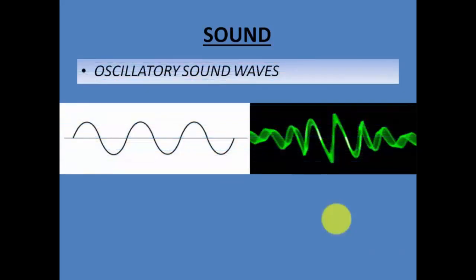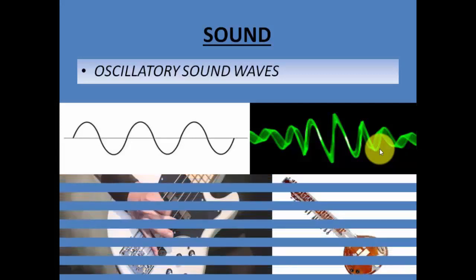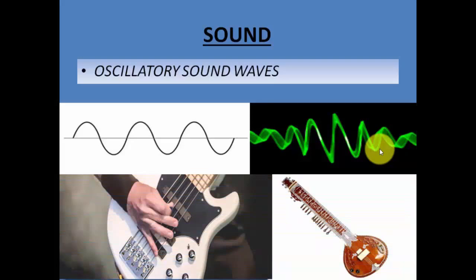So the sounds we hear are nothing but oscillatory sound waves where the amplitude goes high and low, as shown here — the amplitude is high and low, high and low. These are called waves. The vibrations are nothing but these high-and-low waves. When you pull the string, the string vibrates, the molecules vibrate, and each molecule vibrates the adjacent molecules — and that is how the entire instrument vibrates and sound is produced.